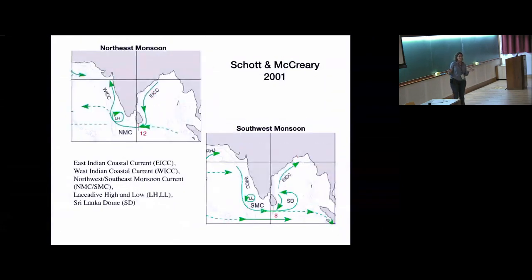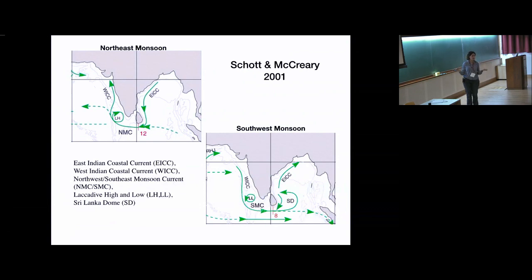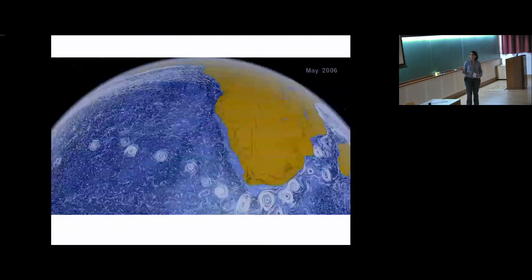Looking at an earlier publication in a simplified Bay of Bengal schematic, some current names you may hear this week include the northeast monsoon current and southwest monsoon current — which reverse directions with the monsoon winds — as well as the east Indian coastal current and west Indian coastal current, which also reverse. In the Bay of Bengal there is a recirculation known as the Sri Lanka Dome.